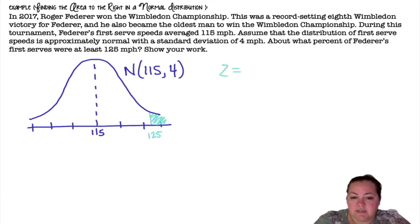I'm going to find the z-score that corresponds with that. My value is 125 minus the mean divided by the standard deviation gives me 2.5. So I could go on table A and I could find 2.5 on the left side, 0.00 on the top and match them up. That would give me the area to the left. I'd have to subtract that from 1 to find the area on the right.